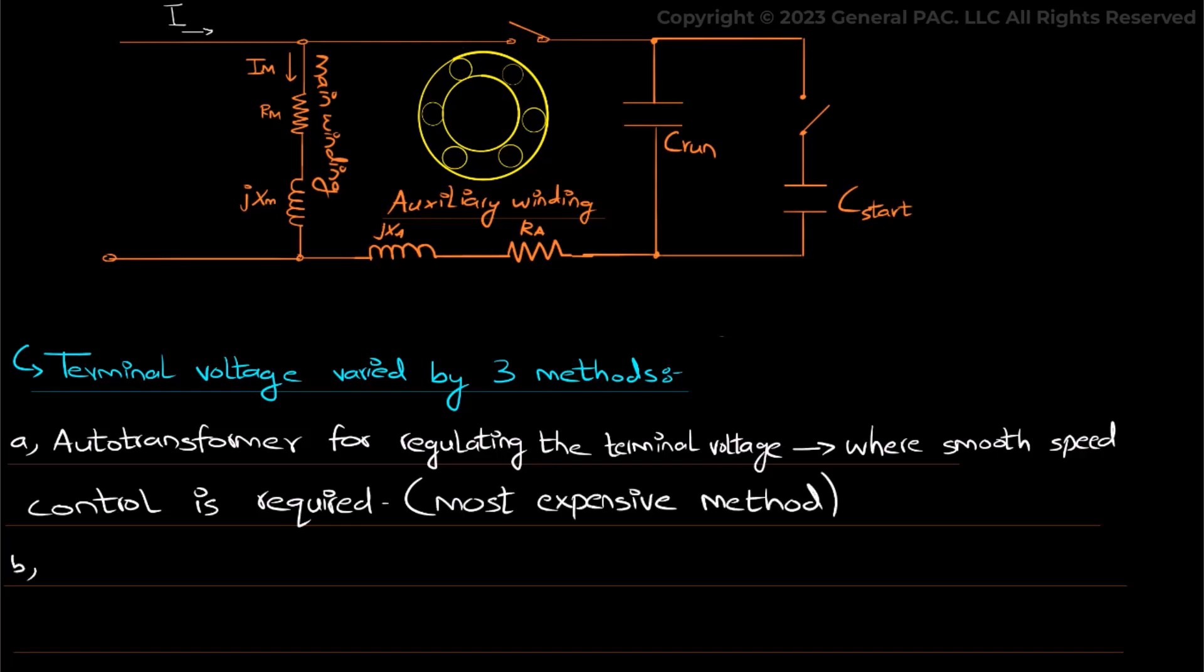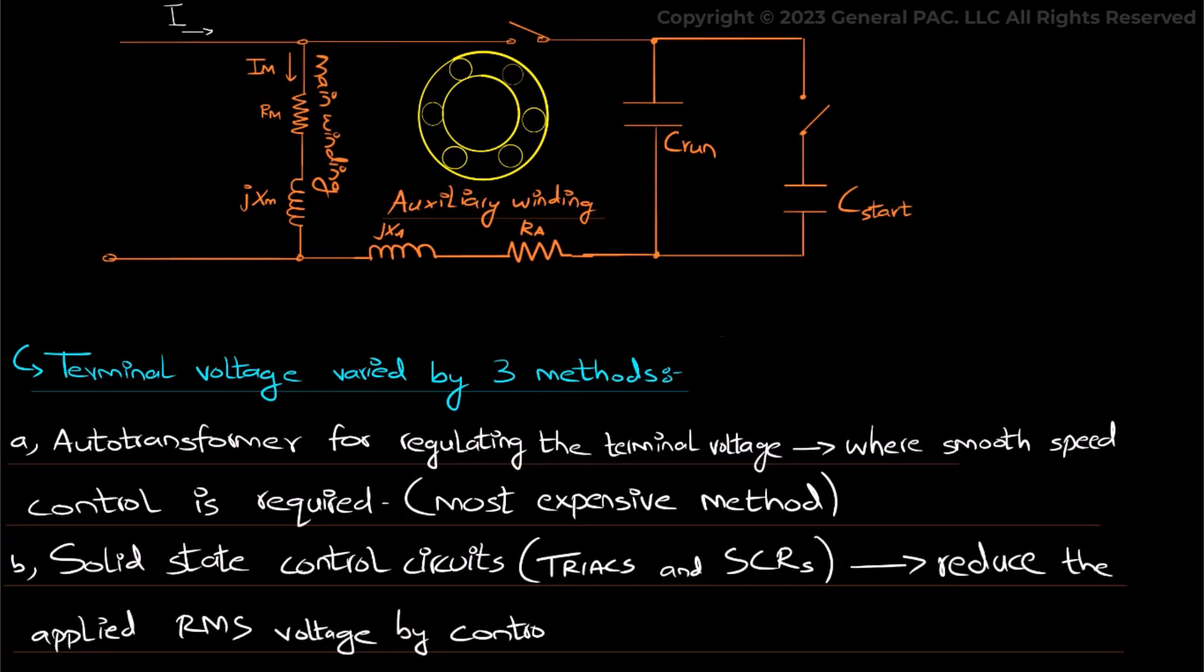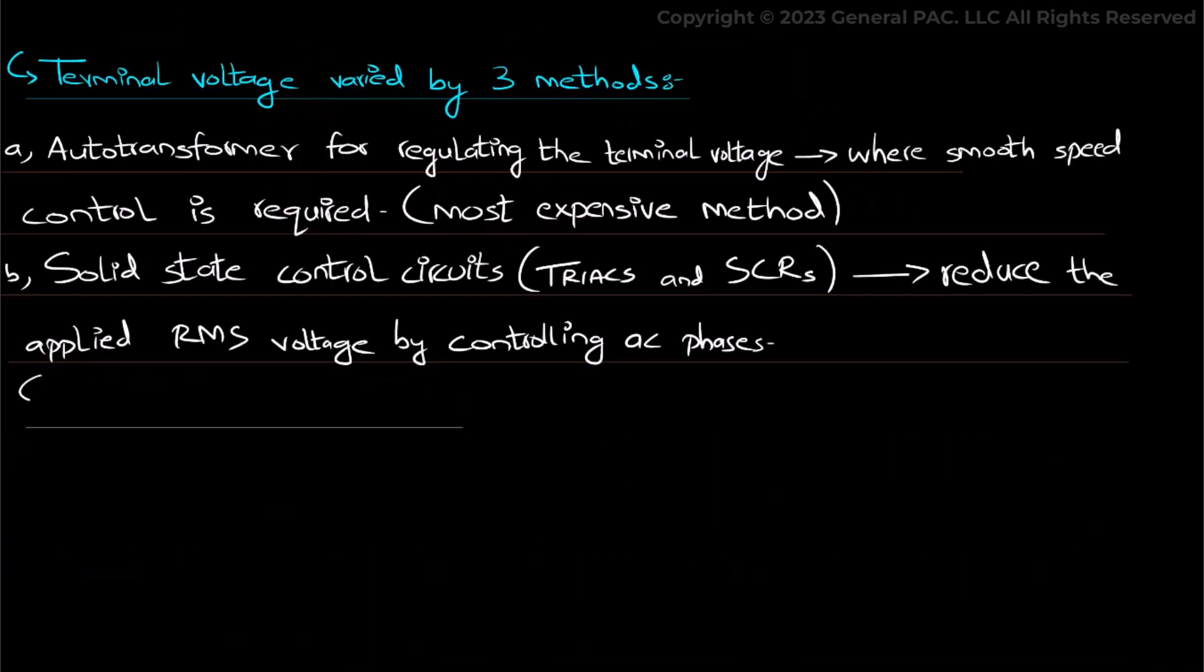Number two, by a solid state control circuit consisting of triacs and SCRs, and they are used to reduce the applied RMS voltage by controlling AC phases, and these are the most common and cheaper than the autotransformers.